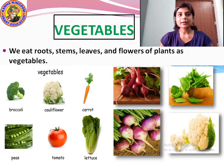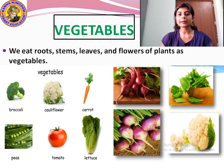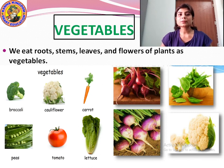Now let us study about vegetables. We eat the root, stem, leaves and flower of the plant as vegetables. For example: broccoli, cauliflower, carrot, peas, tomato, lettuce, spinach and radish — all these are vegetables and different parts of the plant.